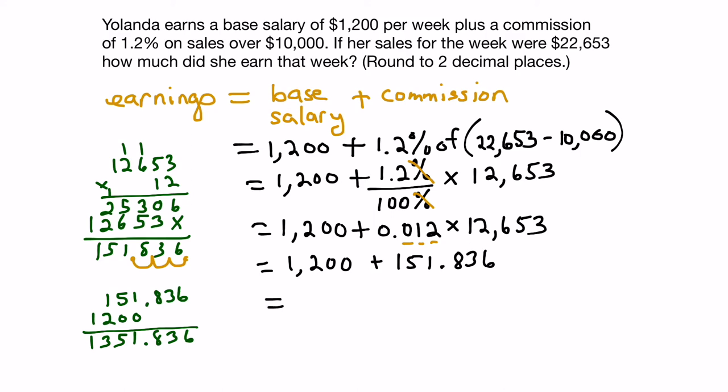So our preliminary answer is 1,351.836. But we look back up here, and we see that we have to round to two decimal places. So where's the second decimal place? It's right here. So we look to the number to the right of that, it's a 6, because it's 5 or bigger, we bump this number up by 1.